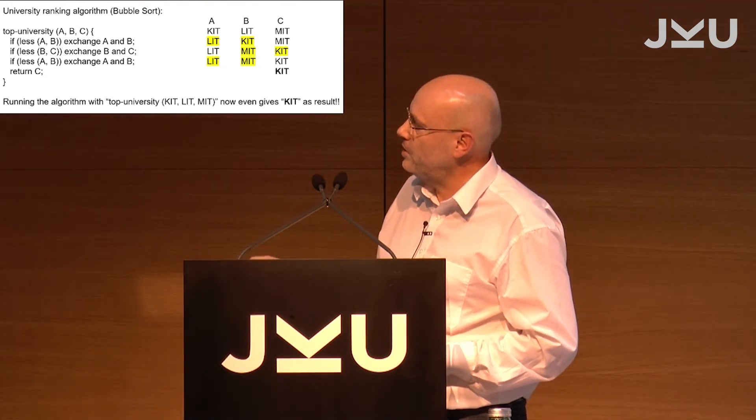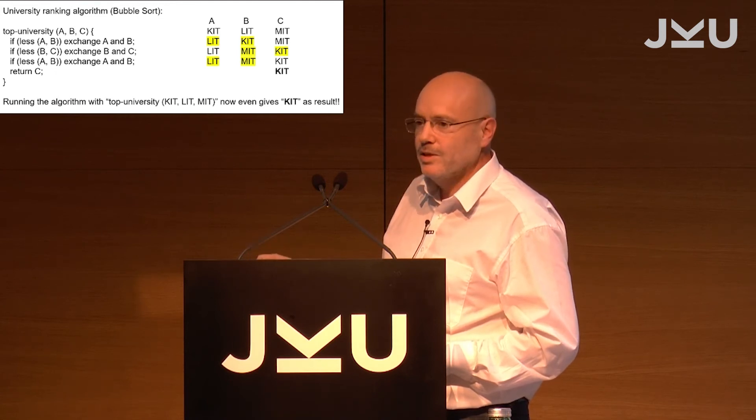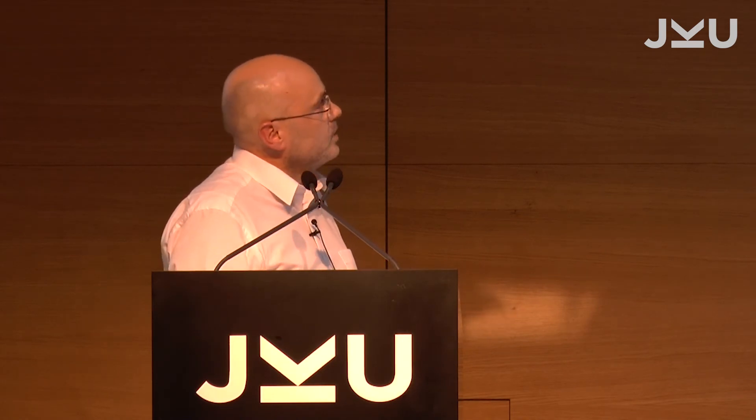With the enriched database, KIT and LIT are swapped, then KIT and MIT are swapped, and after the final iteration we get KIT as the top university — which is also wrong! But computer scientists should see the bug immediately: bubble sort is sorting in the wrong direction. It's actually sorting correctly, but we need to return the first element, column A, not the last. Doing that gives us LIT as the best university.